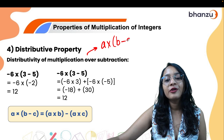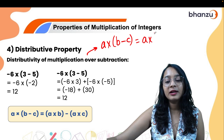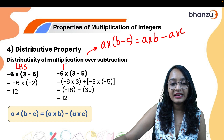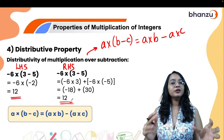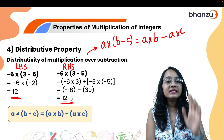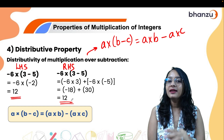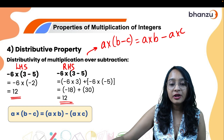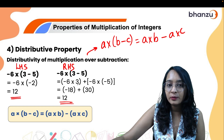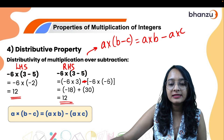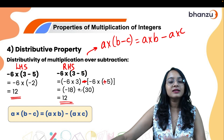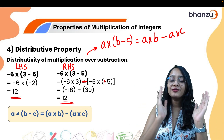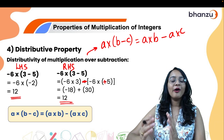The same applies for subtraction: a × (b − c) = a × b − a × c. When you check the left-hand side and right-hand side, the answers are the same. So distributive property has two types: distributivity of multiplication over addition, and distributivity of multiplication over subtraction. You just have to be very careful with the signs.